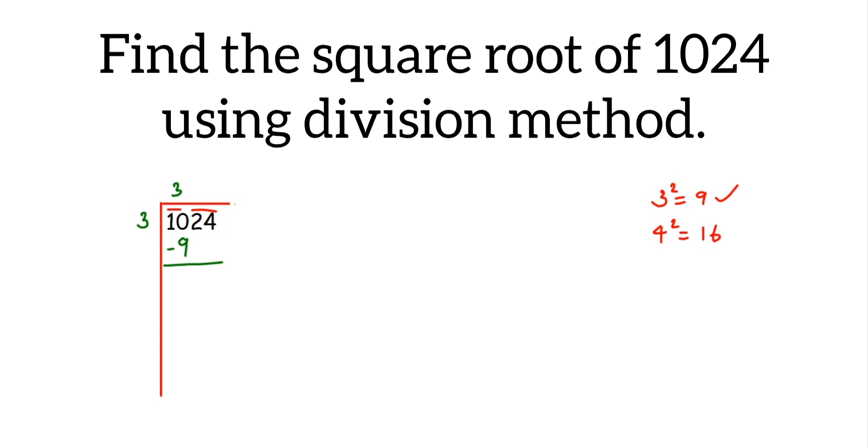We subtract these two numbers, we get 1 as a remainder. Now drop the next number. So when you drop, you'll drop the entire pair, the whole pair which is 24.